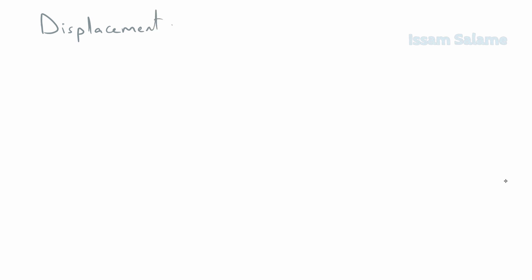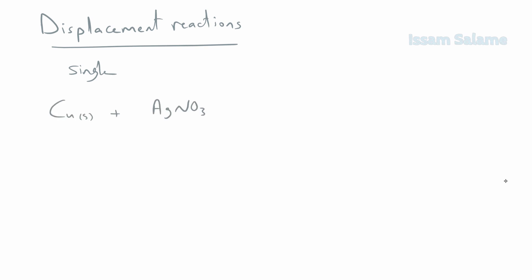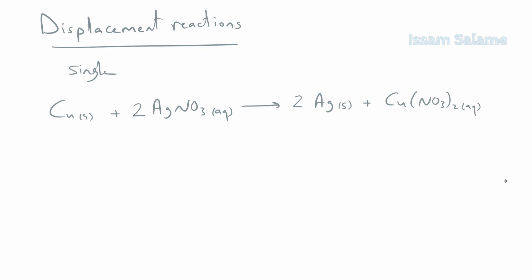The last type of chemical reactions I'm going to explain is displacement reactions. I'll start with single displacement reactions. Example: the reaction of copper with silver nitrate to produce silver and copper nitrate. To balance it, we multiply both silver and silver nitrate by two, and now the equation is balanced. Here, copper replaced silver in silver nitrate and produced copper nitrate — that's why it's called a single displacement reaction.